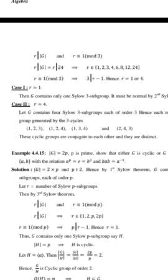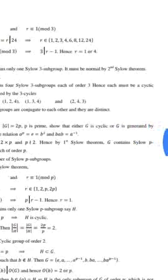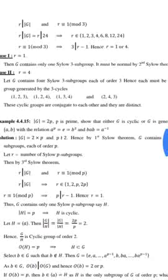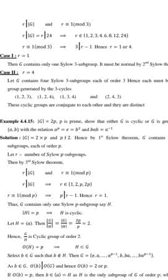Now see the example. The order of G is equal to 2P where P is prime, so that G is cyclic or G is generated by A and B with the relation A raised to P is equal to E, equals B squared, and BAB equals A inverse.